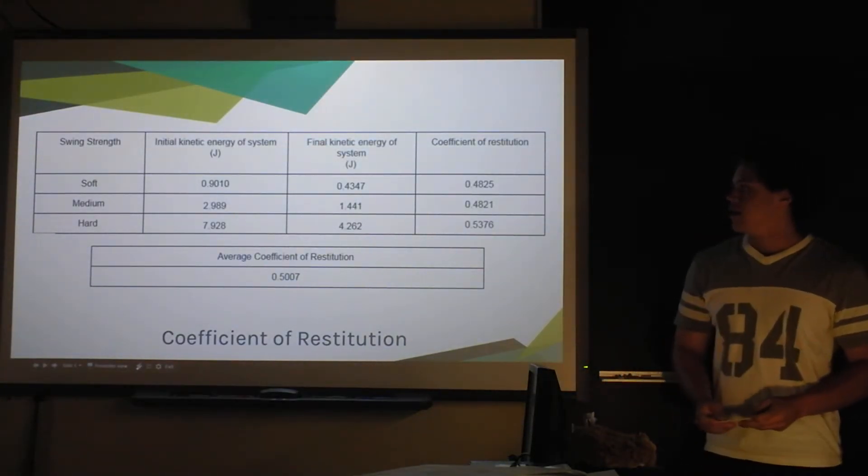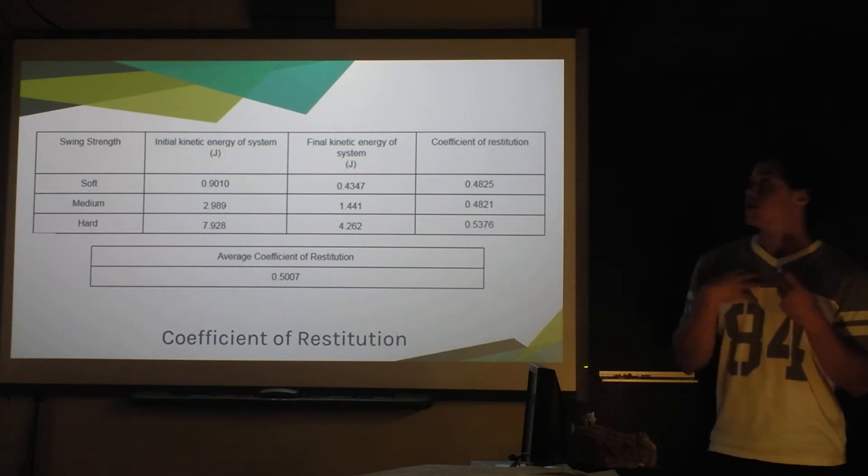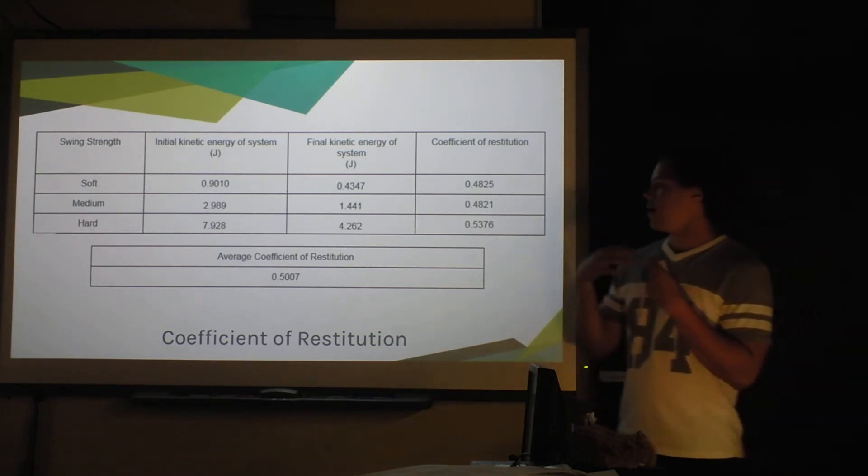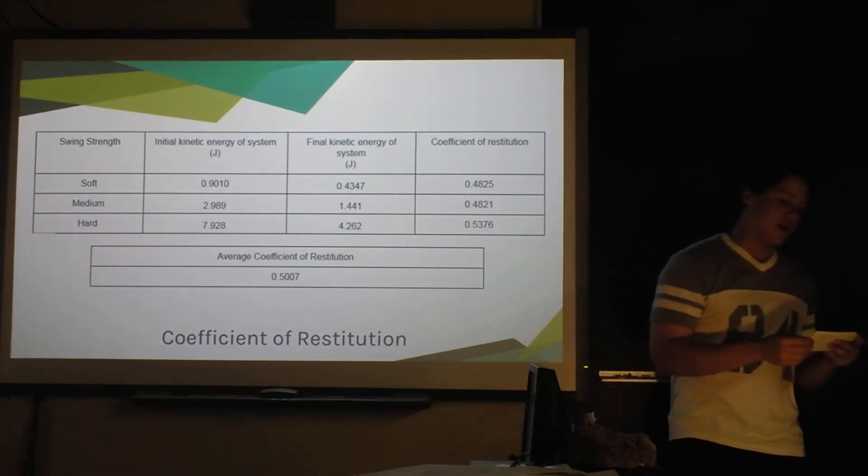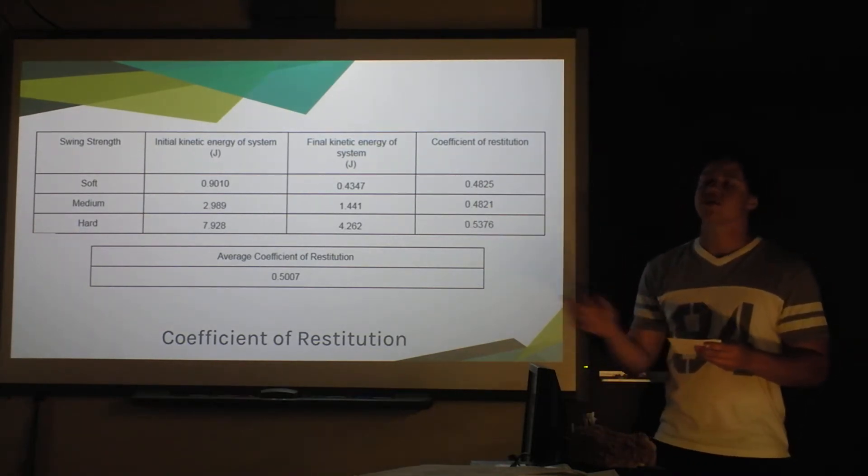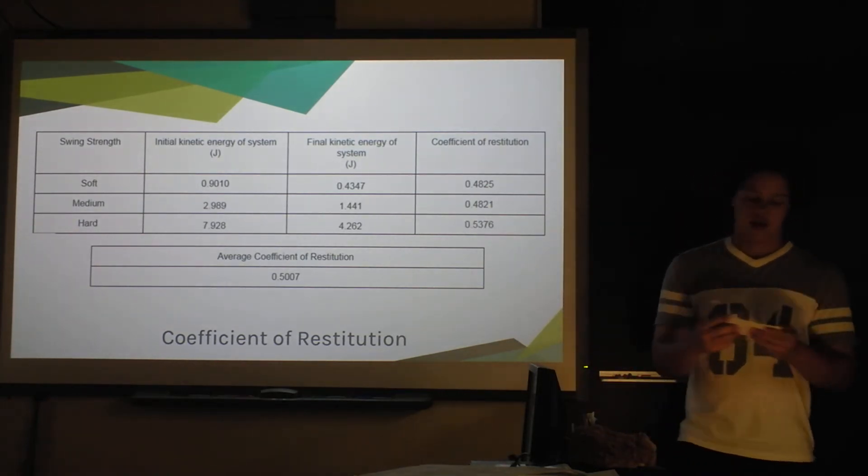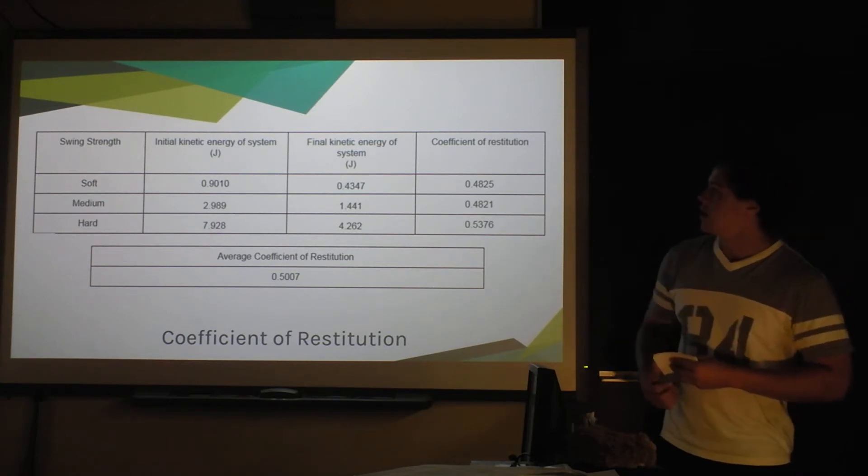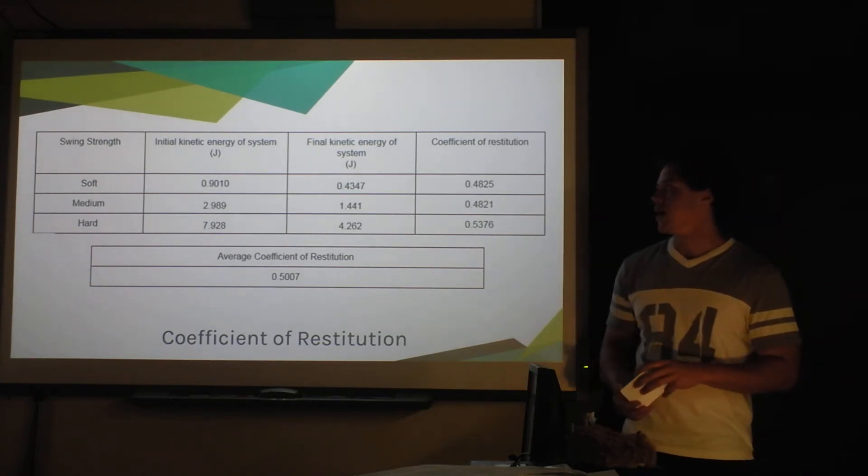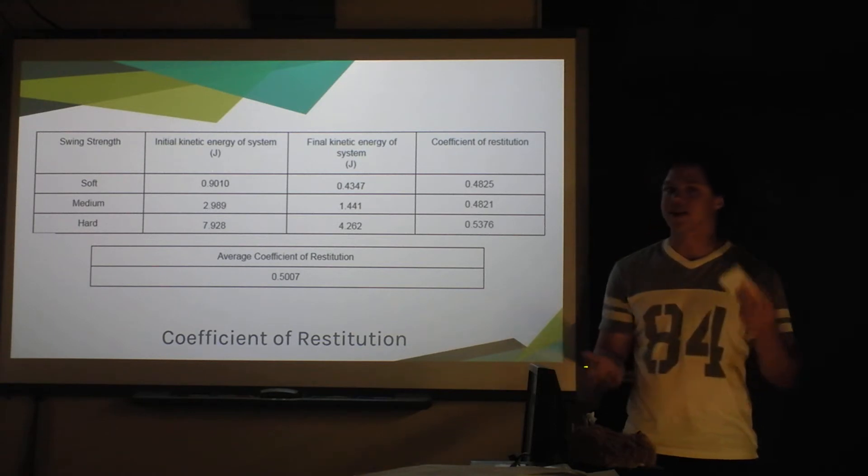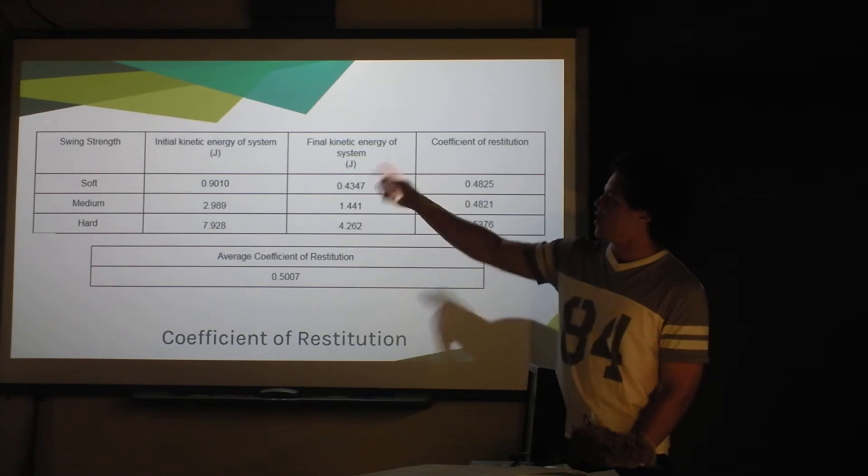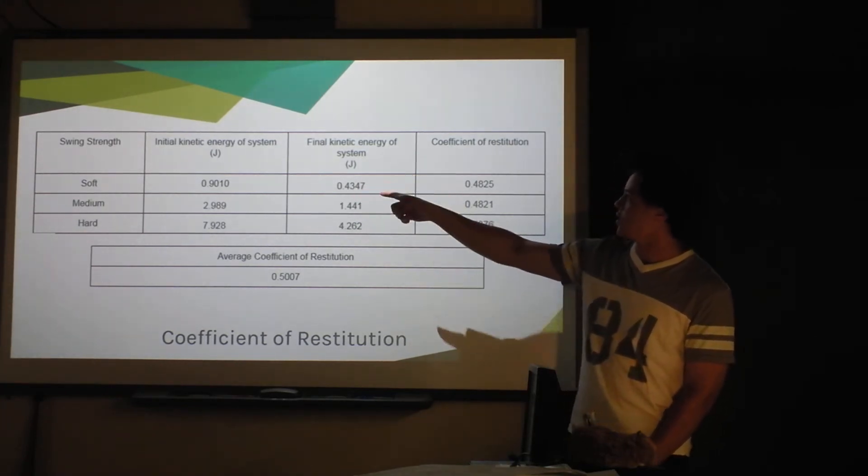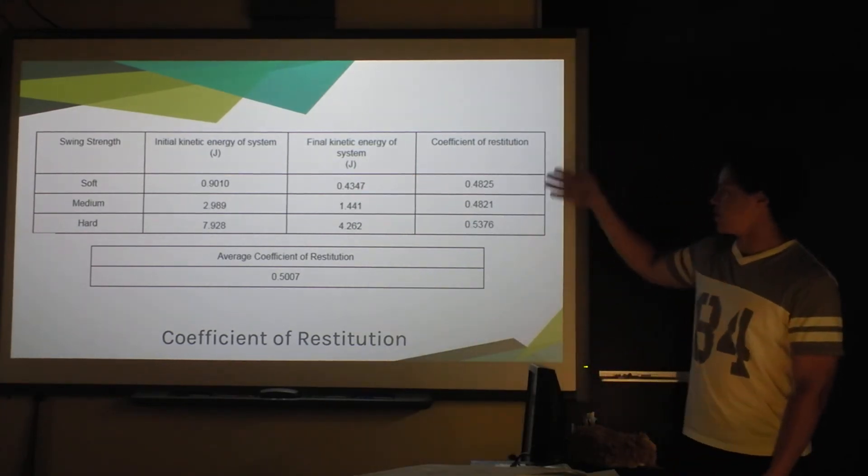Here's all the data I took. I did three different swing strengths: soft, medium, and hard. And then I used one-half mv squared, because I had the mass of all the stuff. I found the velocity with video analysis and found the initial kinetic energy and the final kinetic energy and the transfer.